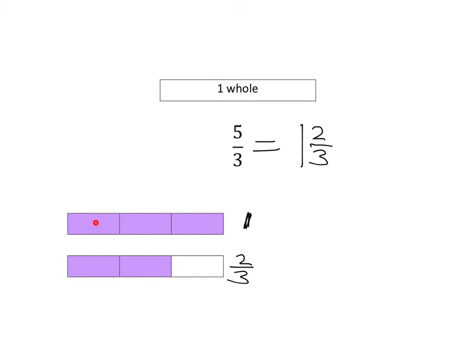Well, we can see that for every 3 thirds we have, we've got a whole. In other words, we're asking ourselves, how many 3s are there in 5? So to get our answer, what we can do is we can take 3 and divide it into 5. To do this, 3 goes into 5 once, and 1 times 3 is 3, so we have a remainder of 5 minus 3 is 2. So 3 goes into 5 once, and we have 2 little pieces left over, and so that is how we get our answer, 1 and 2 thirds.